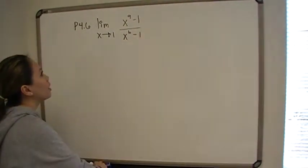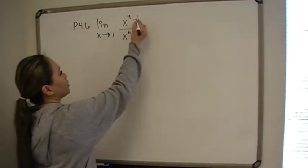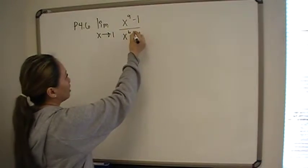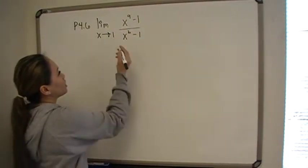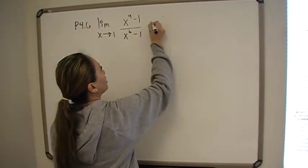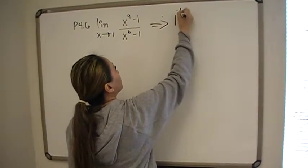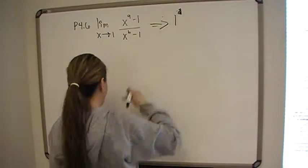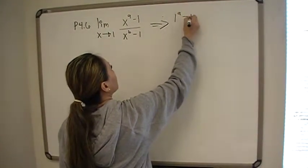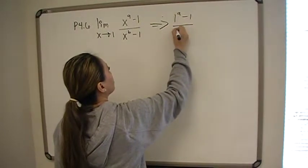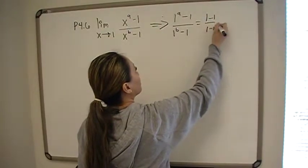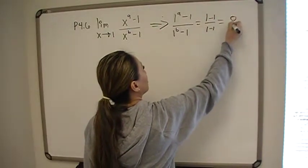We're supposed to find the limit as x approaches 1 of x to the a minus 1 over x to the b minus 1. Let's plug in 1 into the function: 1 raised to the a power minus 1 over 1 to the b power minus 1. 1 to any power is 1, so we have 1 minus 1 over 1 minus 1, which equals 0 over 0.